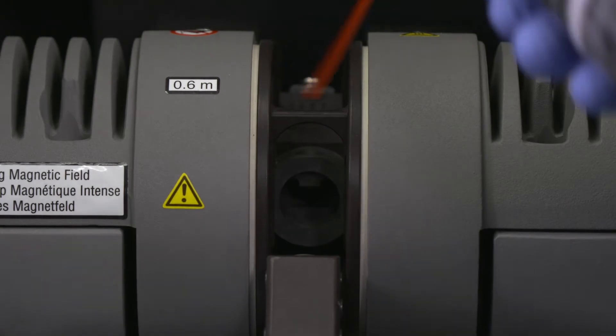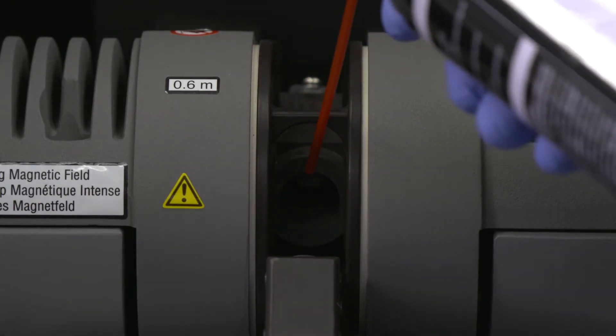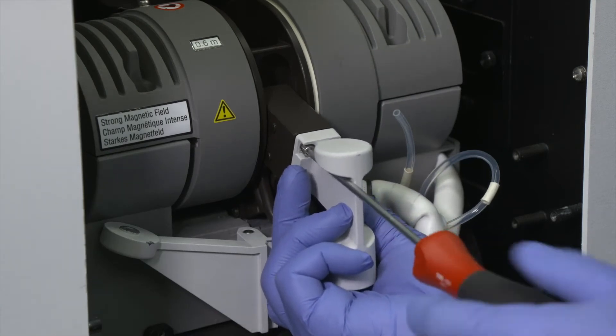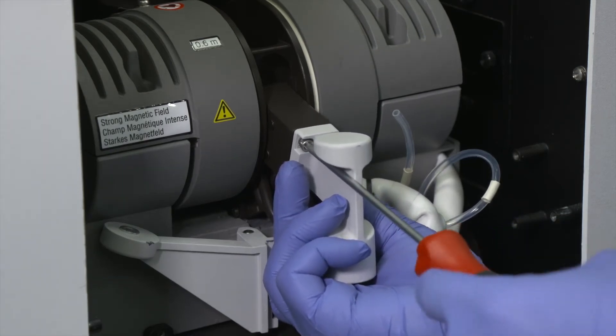Then blow out any graphite particles from the contact housing with clean, dry compressed air. Replace the pressure cylinder carefully, ensuring no damage to the o-ring.